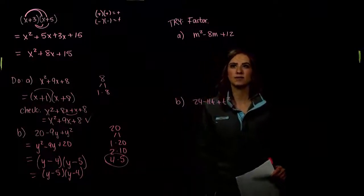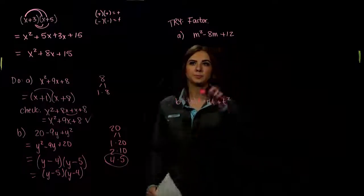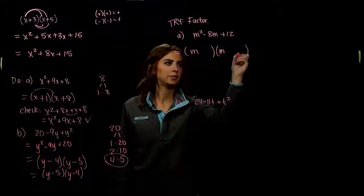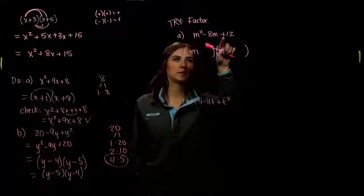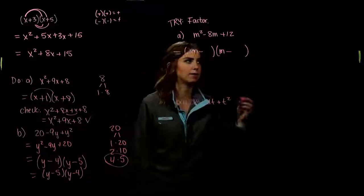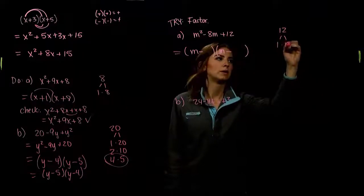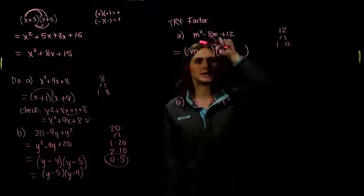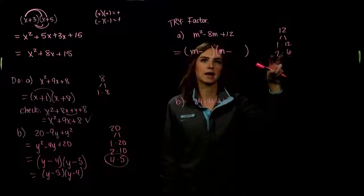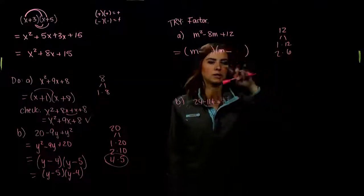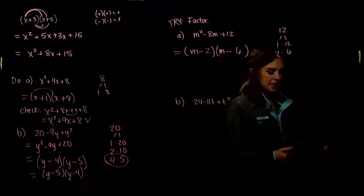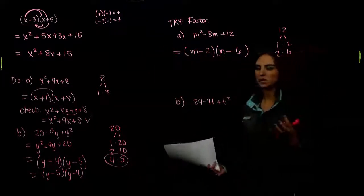For the practice problem m squared minus 8m plus 12: there's a 1 on the front, so it breaks into m and m. We need to multiply to be positive and add to be negative — so both signs need to be negative. Looking at factors of 12: 1 and 12 are too big. 2 and 6 — multiply to give 12, add to give 8. Both negative: (m minus 2)(m minus 6).